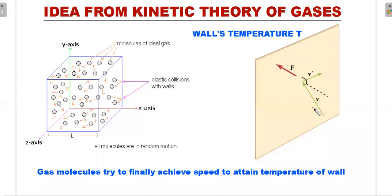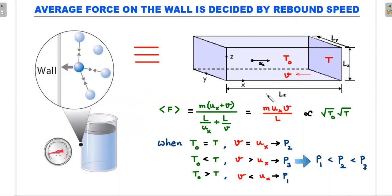If the wall has a temperature different from the gas, over time gas molecules try to achieve the speed maintained by the wall. The wall's job is to bring the gas inside to its own temperature. So the speed at which the molecule hits will not be the same as the rebound speed — the rebound speed will be higher if the wall is at a higher temperature, and lower if the wall is at a lower temperature.